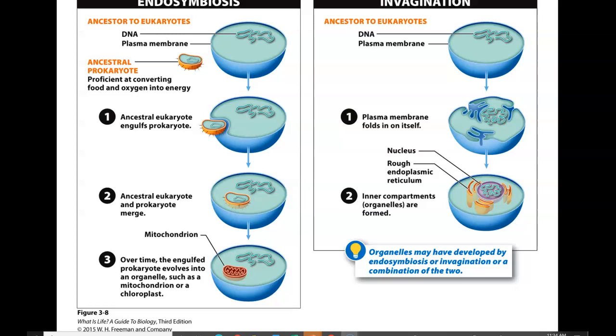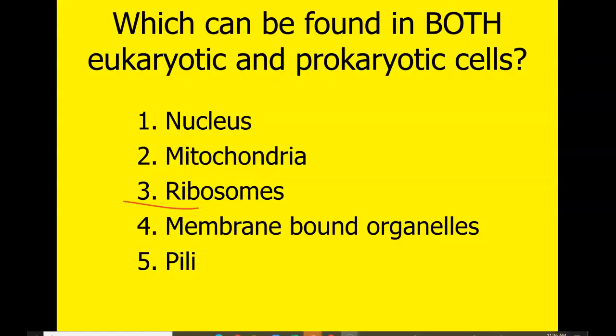Which can be found in both prokaryote and eukaryote cells? If you answered the ribosome, you are correct. Eukaryotes are single-celled or multicellular organisms whose cells have a nucleus containing linear strands of genetic material, and also commonly have organelles throughout their cytoplasm, which may have originated evolutionarily through endosymbiosis or invagination — or maybe even both.